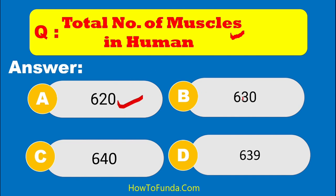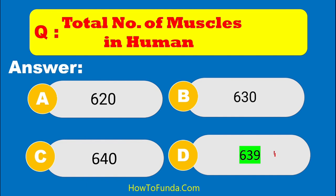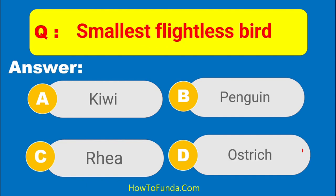How many muscles are in the human body? The answer is 639 muscles in the human body. Which is the smallest flightless bird — is it kiwi bird, penguin, rhea, or ostrich?